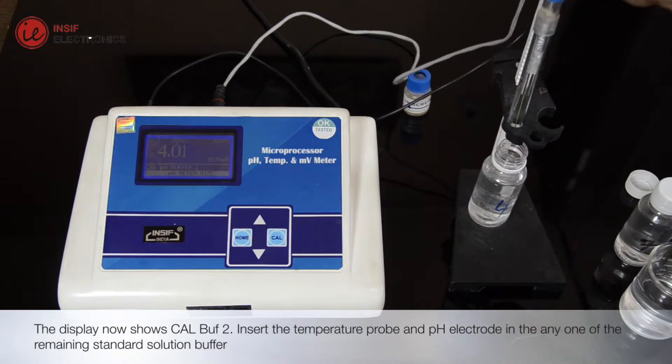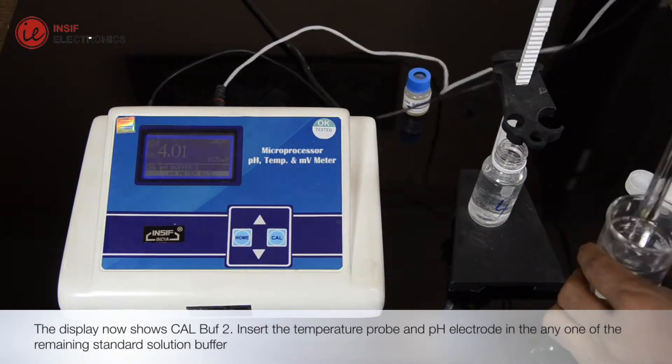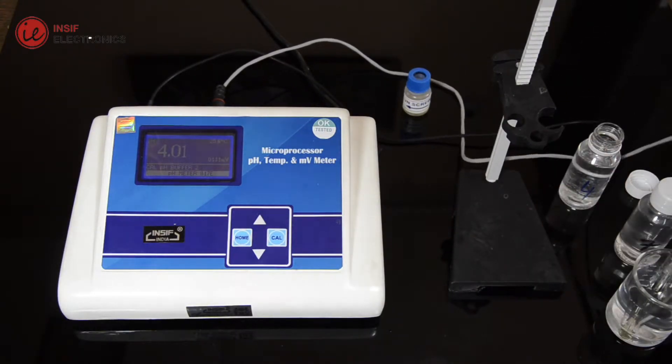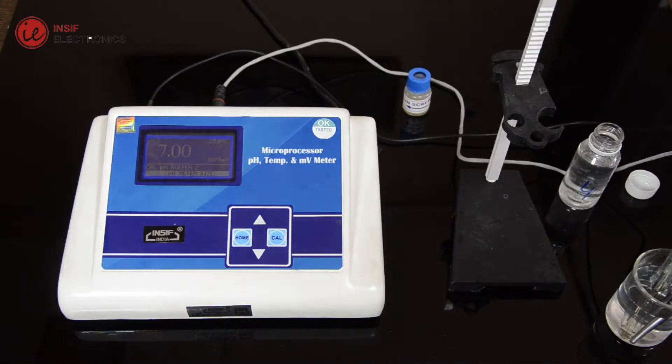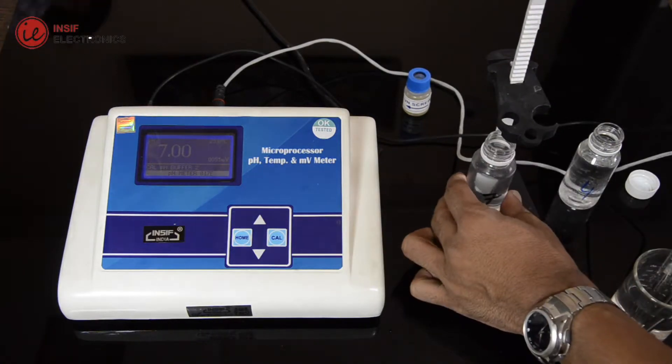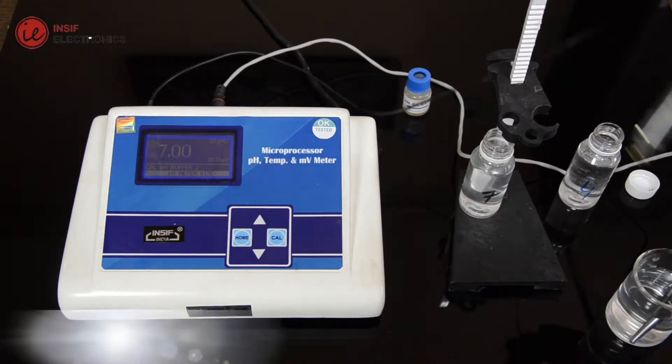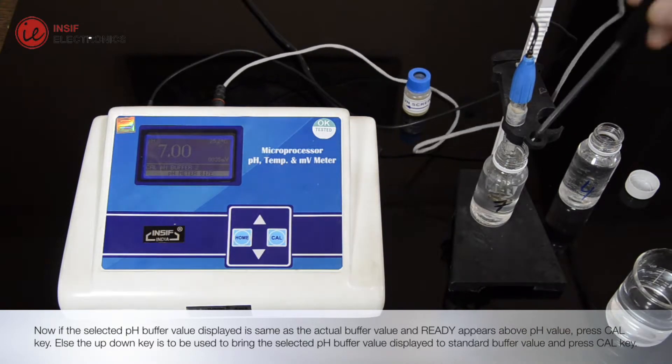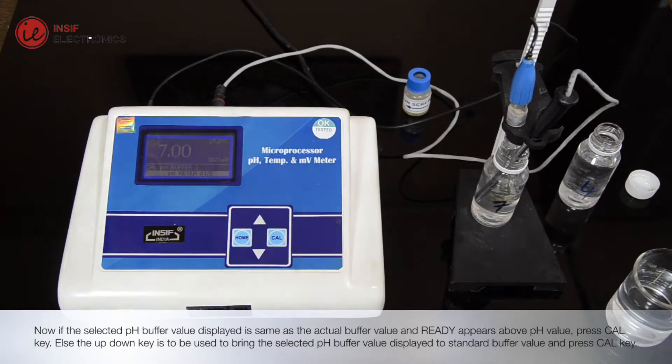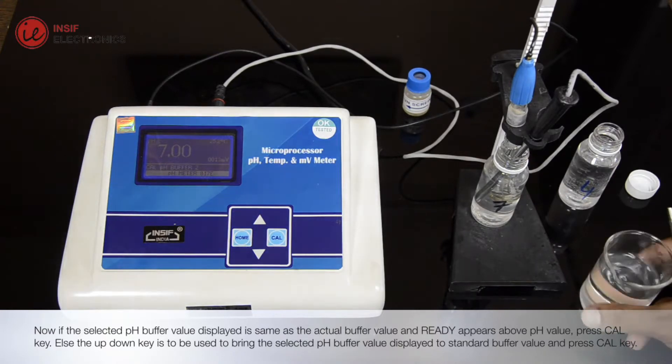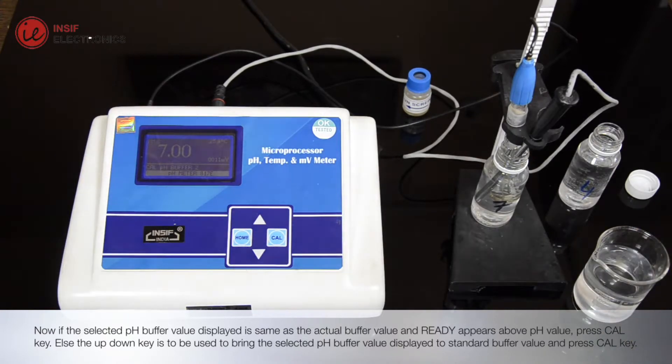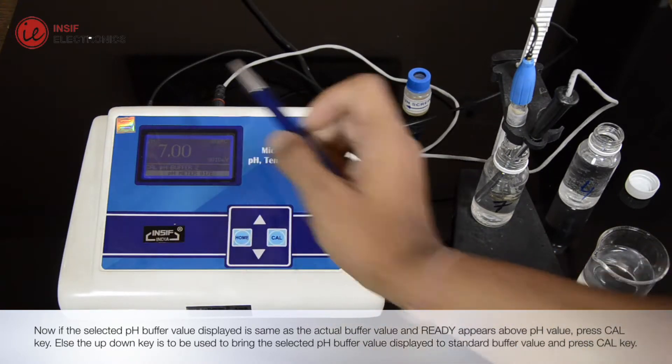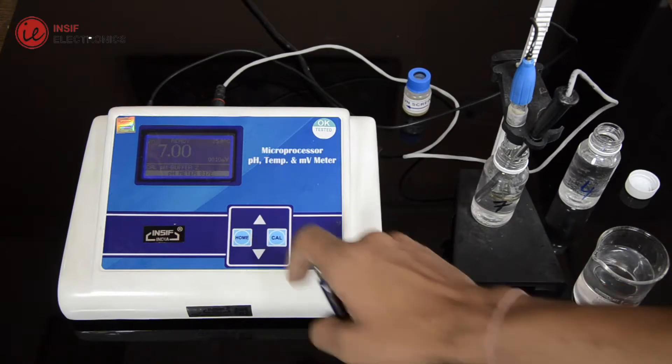Insert the temperature probe and pH electrode in the NE1 of the remaining standard solution buffer. If the selected pH buffer value displayed is same as the actual buffer value, and ready appears above pH value, press Cal key. Else the up-down key is to be used to bring the selected pH buffer value displayed to standard buffer value, and press Cal key.